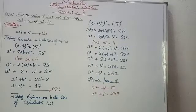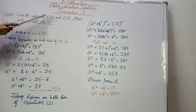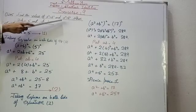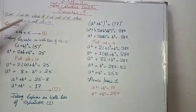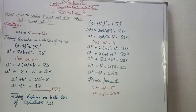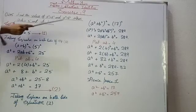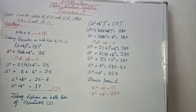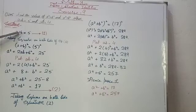Now comes Question Number 5: find the value of a² + b² and a⁴ + b⁴ when a + b = 5 and ab = 4. We have two things to find under two conditions. First, let a + b = 5 — this is Equation 1.